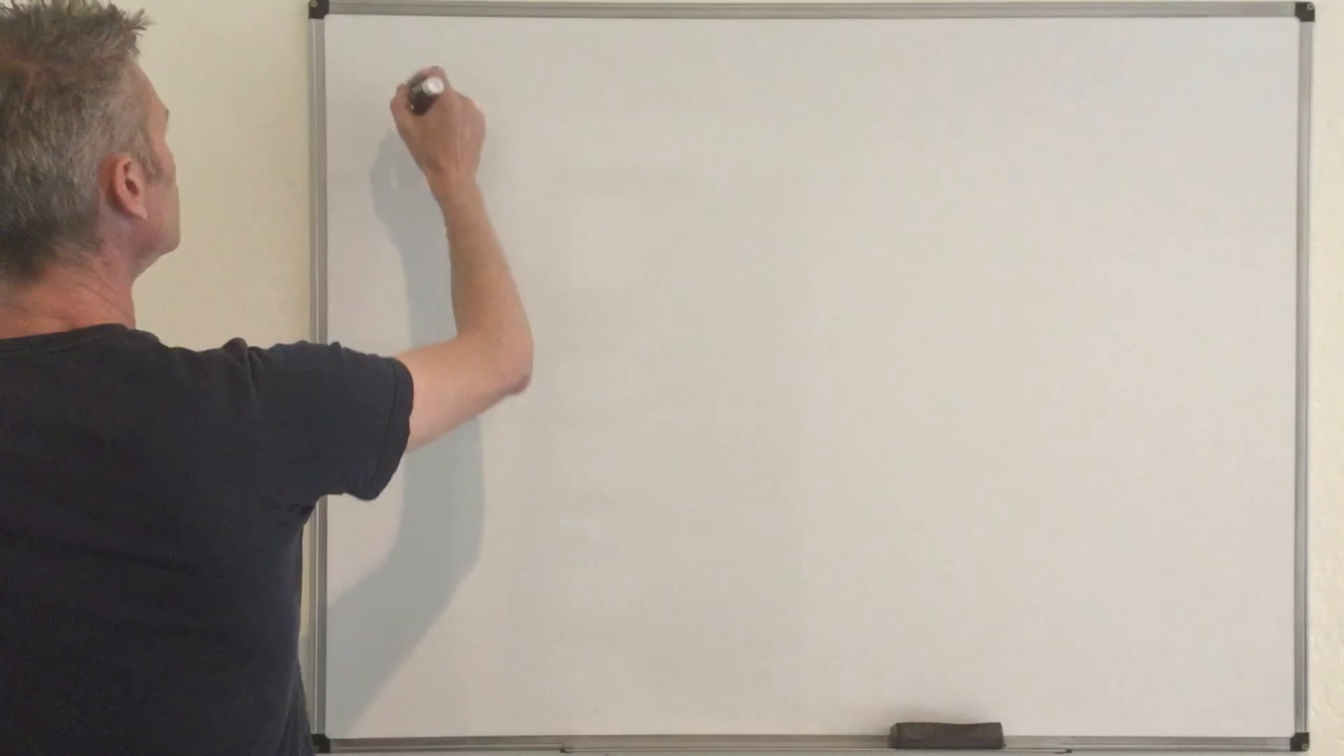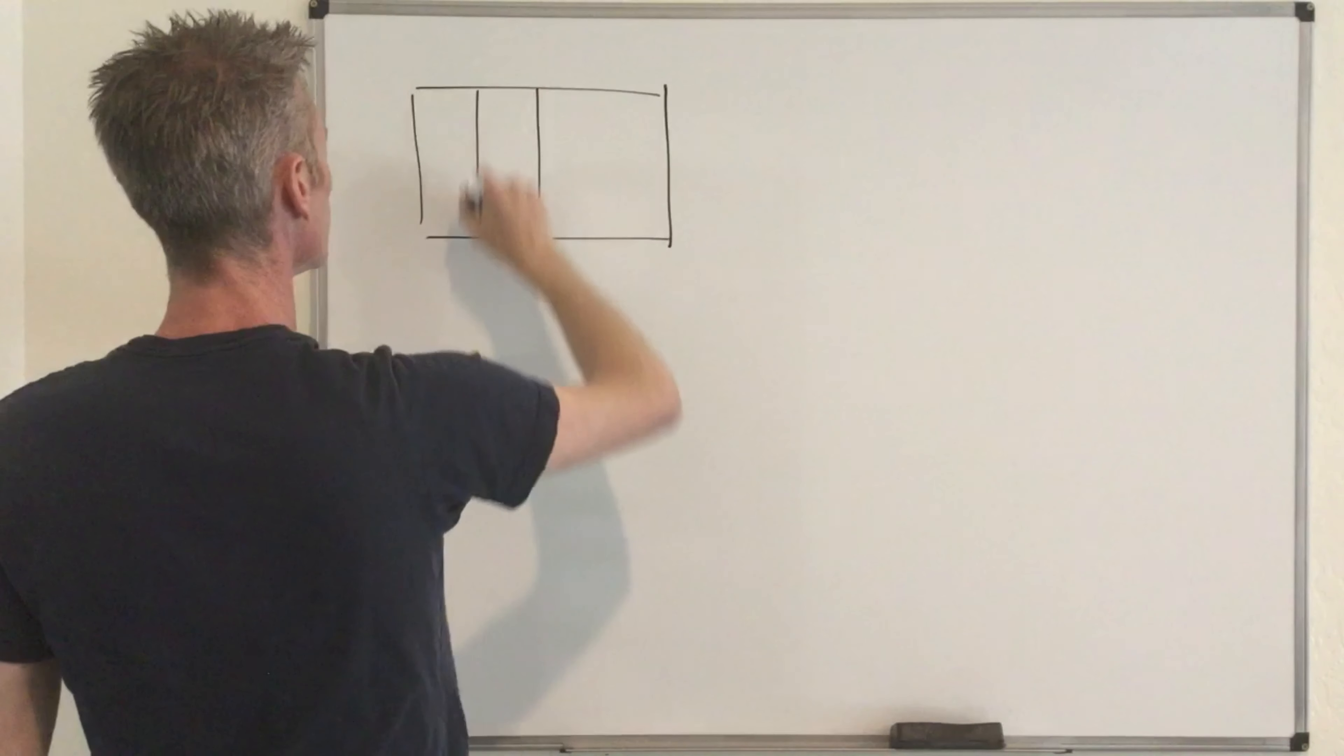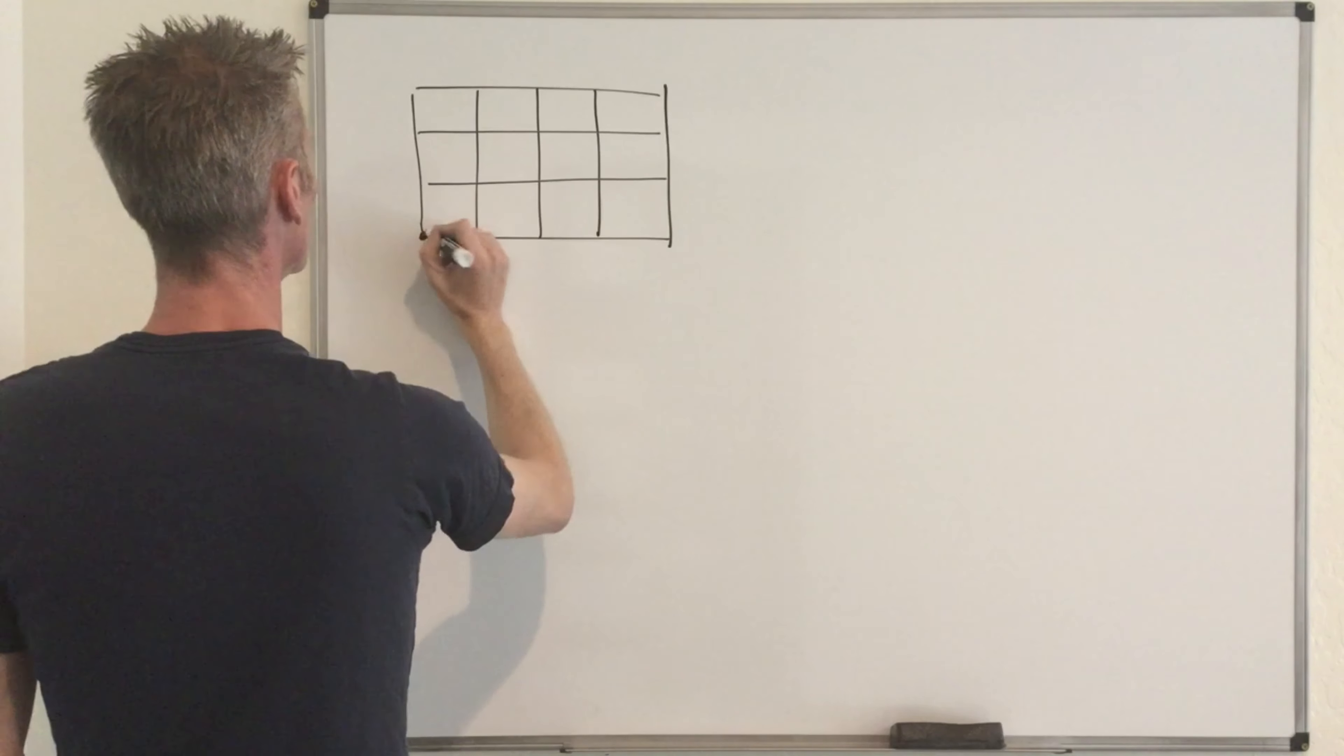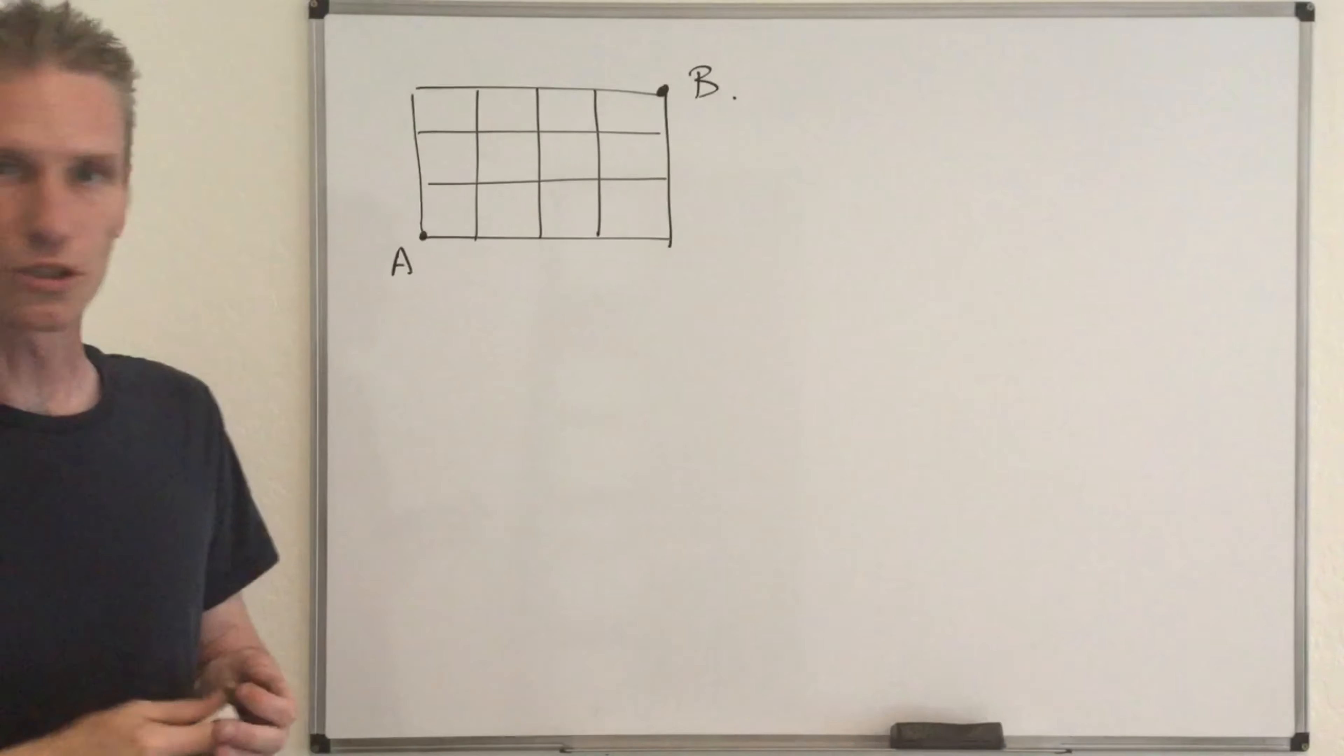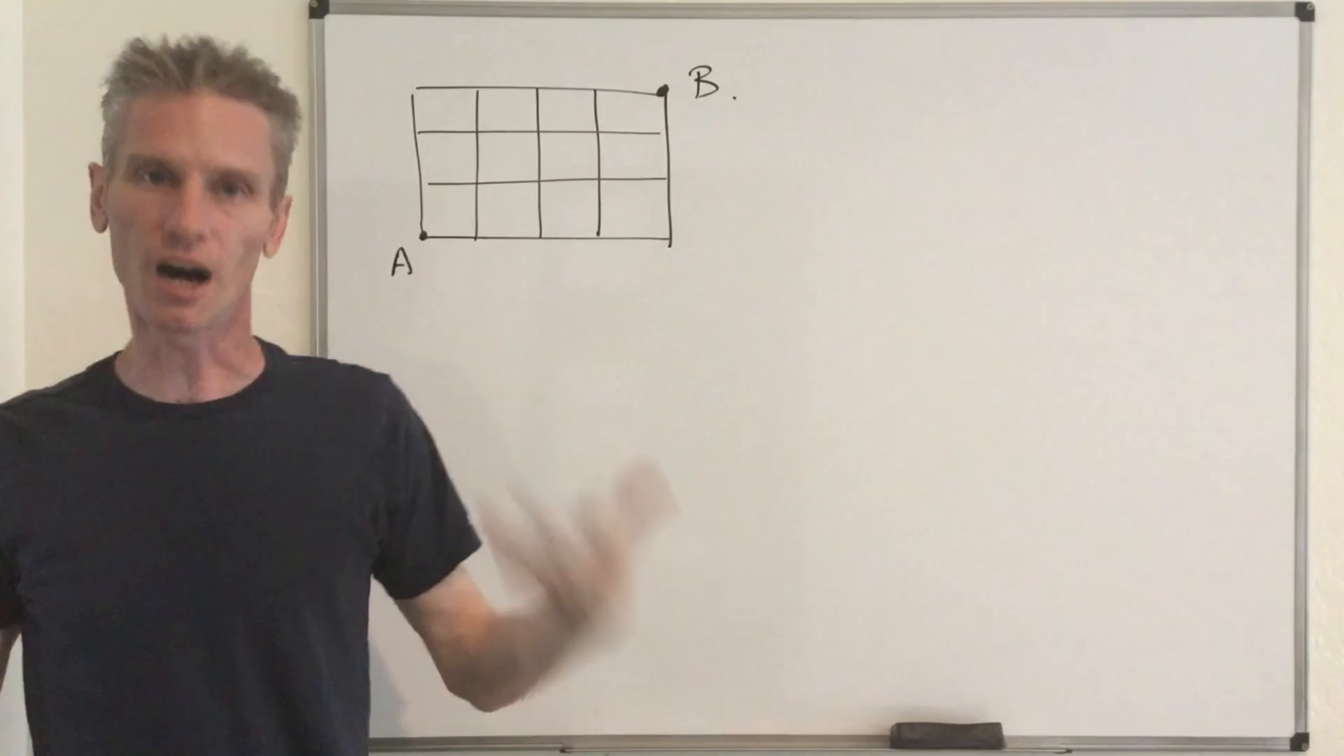So basically you have a grid that looks like this. So that's a four by three grid. Something like this. Then you have point A at the bottom left and point B here at the top right. And the goal is to count the total number of possible paths going from A to B. But you are only allowed to move right or move up.